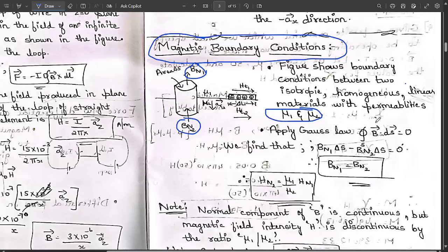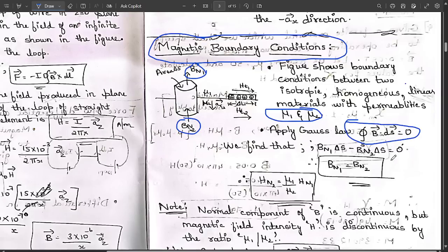Since the upper and lower surfaces are symmetrically equal, Bn1 ΔS = Bn2 ΔS. Taking ΔS as common and cancelling, we get Bn1 = Bn2 — the normal component of magnetic flux density is continuous across the boundary.